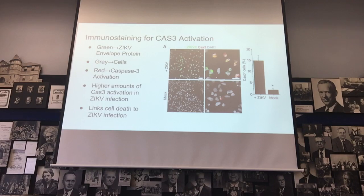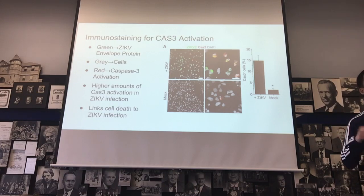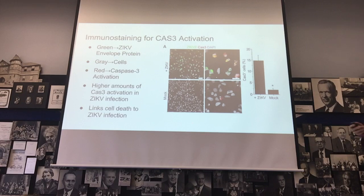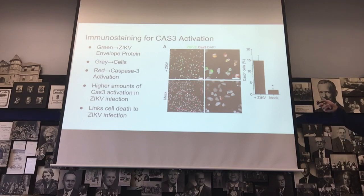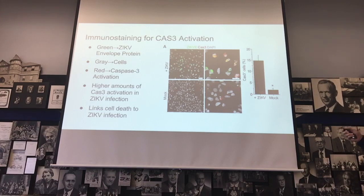They also immunostained for caspase-3 activation. Caspase-3 is central to the apoptosis pathway — signaling proteins tell caspase-3 to trigger cell suicide, and it activates a cascade leading to cell death. Compared to mock-infected cells, Zika-infected cells showed far more red (caspase-3) signal alongside the green Zika signal. Quantification showed Zika-infected cells exhibited approximately 15% caspase-3 activation, while mock cells were around 2.5%.